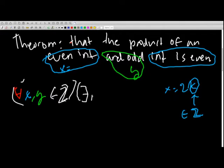There exists some k, there exists some k such that x times our y is equal to 2k.